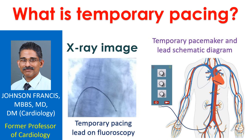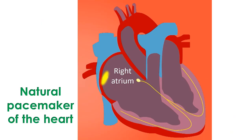A pacemaker is an electronic device used to give regular electrical signals to the heart when the heartbeat has slowed down unduly due to some disease. Normally, heartbeats are regulated by the natural pacemaker of the heart known as the sinus node, situated in the upper right corner of the right atrium, the upper right chamber of the heart.